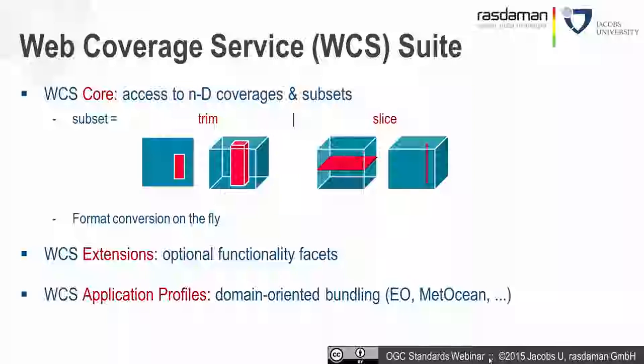WCS extensions add optional functionality facets. Any implementer can decide whether or not to implement a particular extension; however, extensions must be implemented in completeness — every conformance class must be fully implemented. That ensures interoperability. Additionally, application profiles allow for domain-oriented bundling of core and extensions — for example, for earth observation there is a profile for two-dimensional imagery plus timestamps, and in MetaOcean we would talk about four-dimensional climate data cubes.